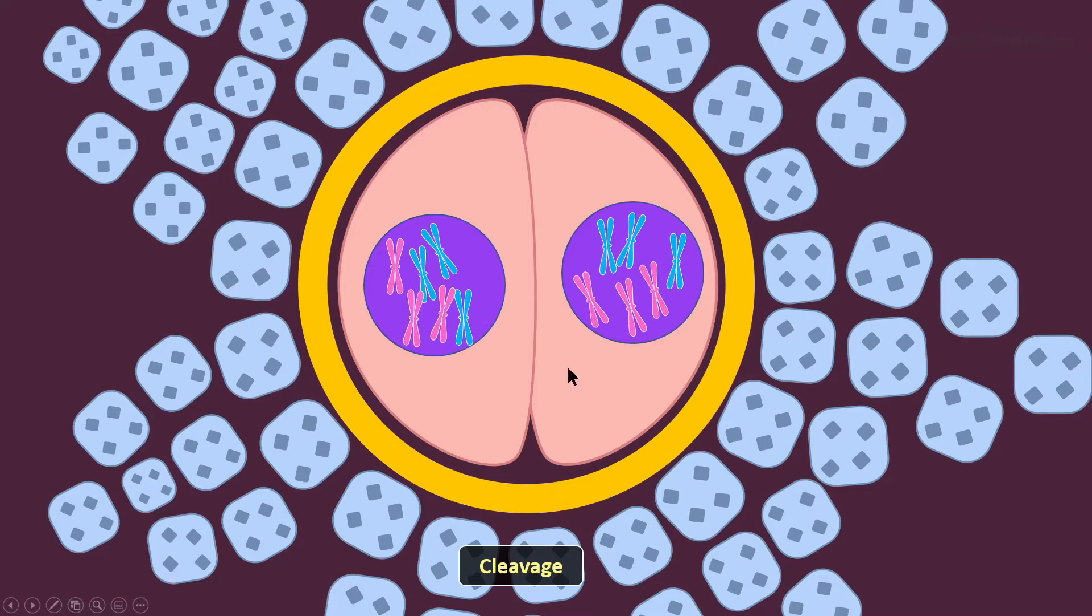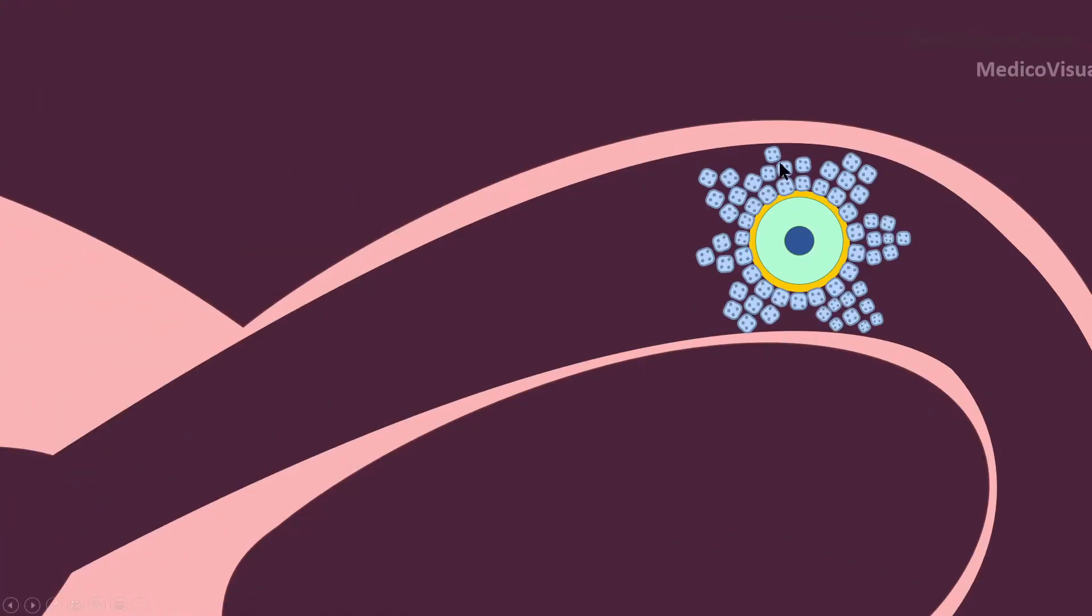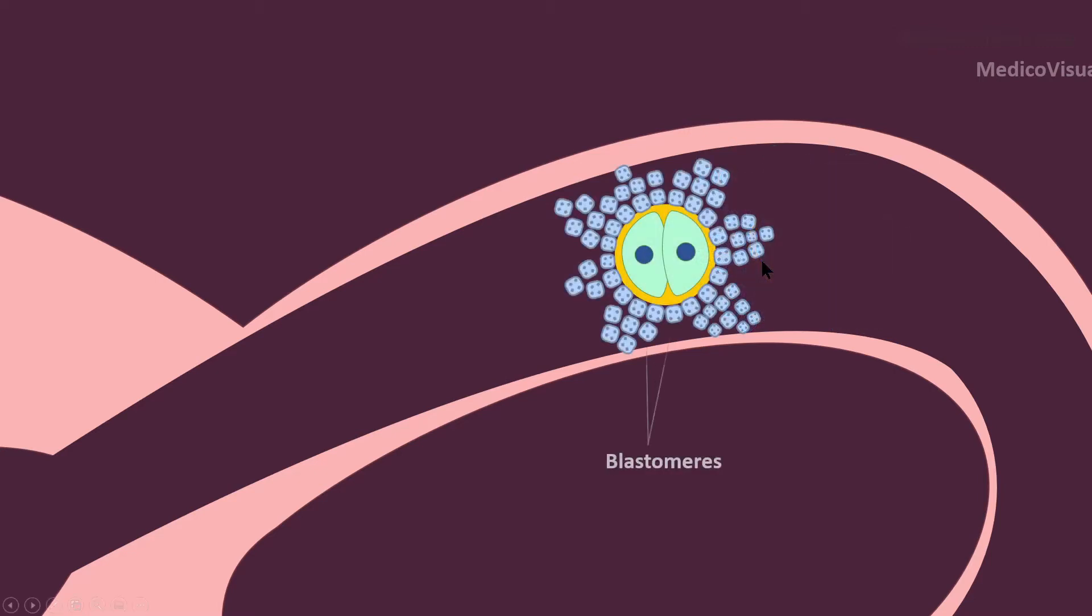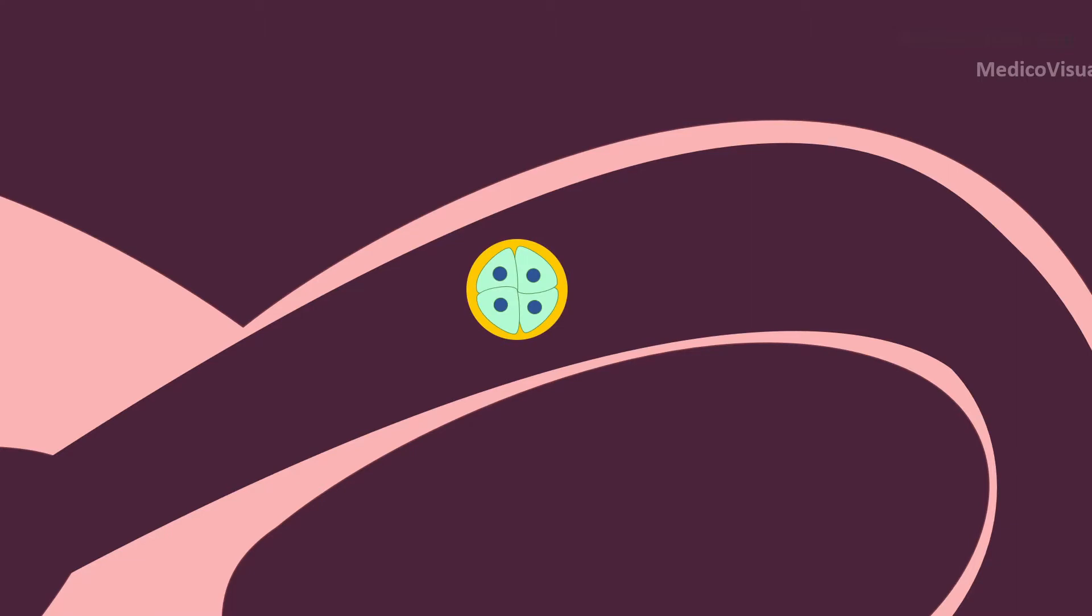And then these cells also undergo the process of cleavage. Initially, the zygote is surrounded by the zona pellucida as well as the corona radiata cells. These cells are called blastomeres. At about 2 cell stage or 4 cell stage, the corona radiata cells dissolve.